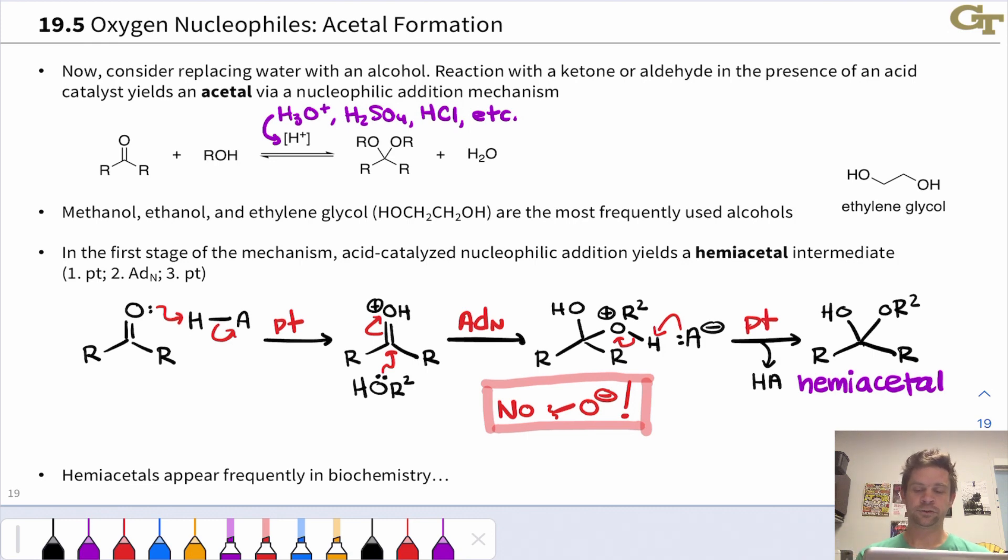Now, a word about this neutral product that we've arrived at. What has happened here is the net addition of OR2 and H, the elements of the alcohol, HOR2, have added across the CO double bond. This looks a lot like hydration. It is essentially acid-catalyzed hydration. The mechanism is identical. It's just there's an R2 group being carried around by the nucleophilic oxygen rather than another hydrogen. This structure is known as a hemiacetal.